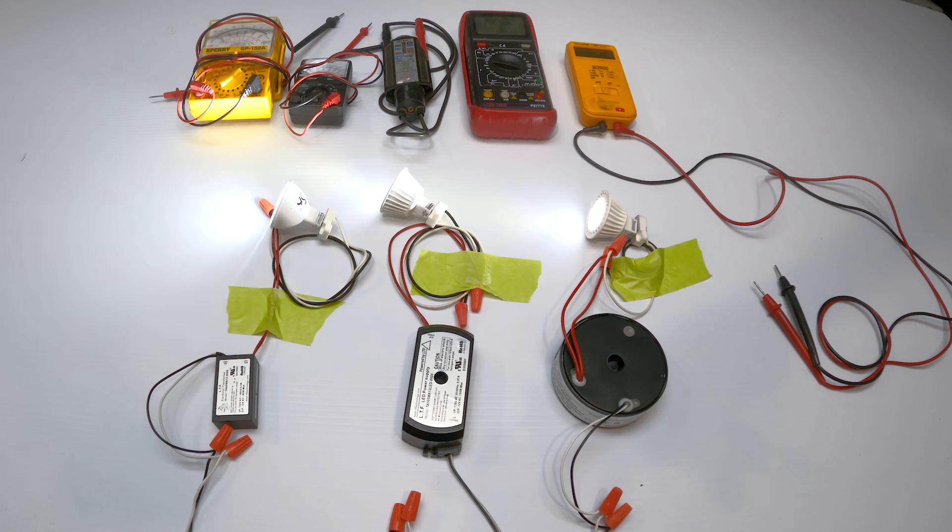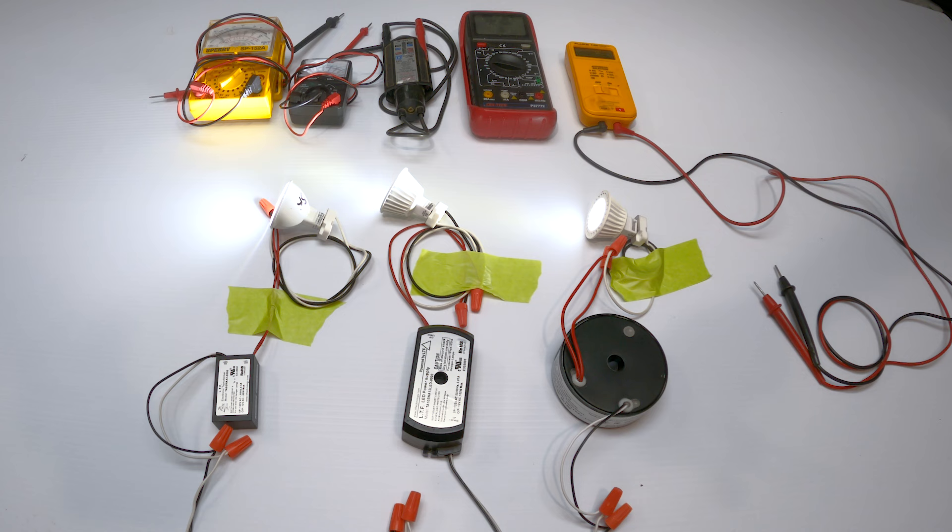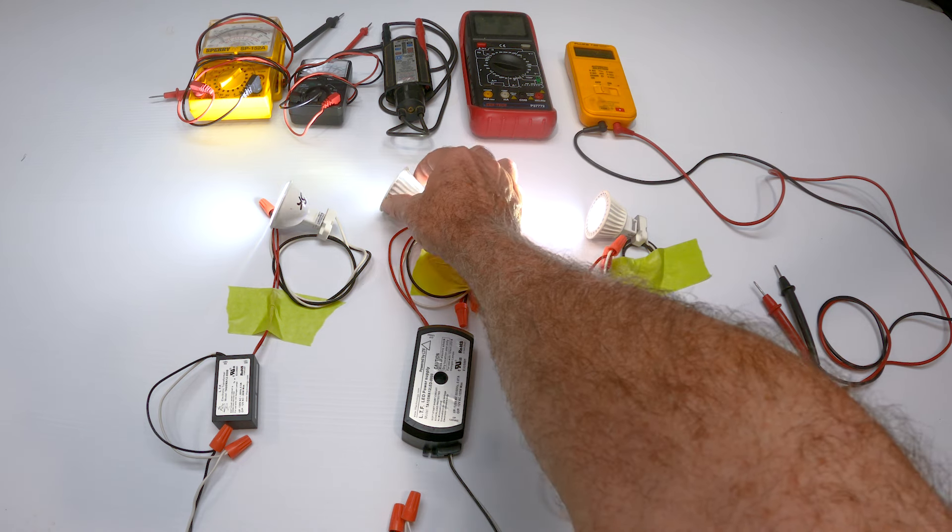Now, a lot of the old halogen dimmers that are out there on people's wall will work, but not all of them. It's really best to have an ELV dimmer, one of the more modern dimmers that are made for LED bulbs.